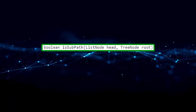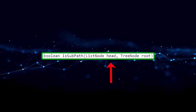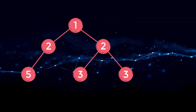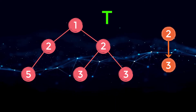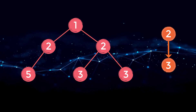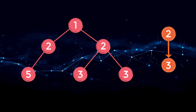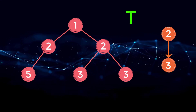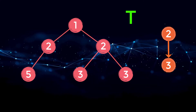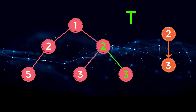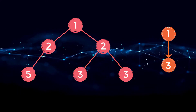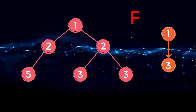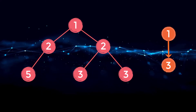For this problem we are given the root of a binary tree and the head of a linked list. We must return true or false if the linked list starting from the head maps to some downward path in the binary tree. In this example we would return true since the linked list two, three is present in the binary tree. However if our linked list was one, three we would return false as there is no downward path of one, three in our tree.